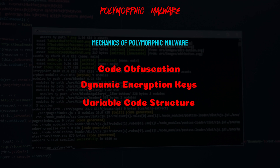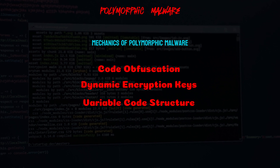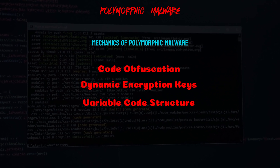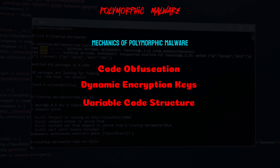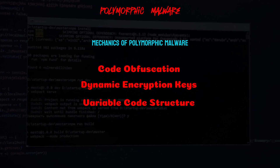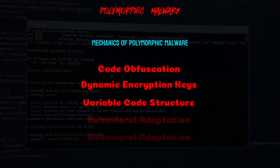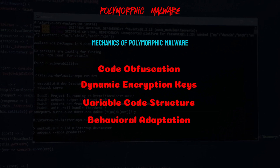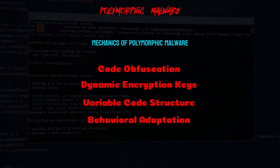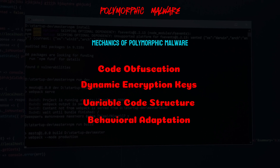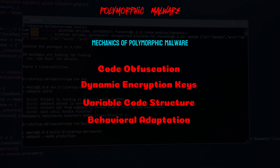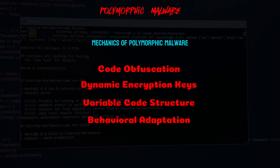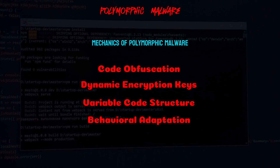Variable code structure: by changing its code structure, polymorphic malware can confuse security tools that rely on static signatures for detection. Behavioral adaptation: polymorphic malware can alter its behavior or execution patterns to blend in with normal system processes, making it harder for behavioral-based detection methods to identify the threat.